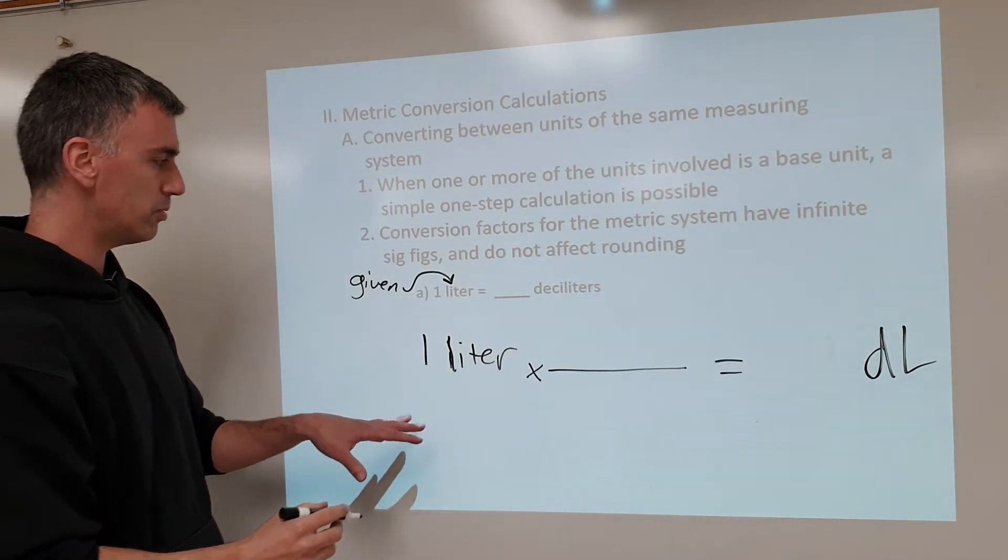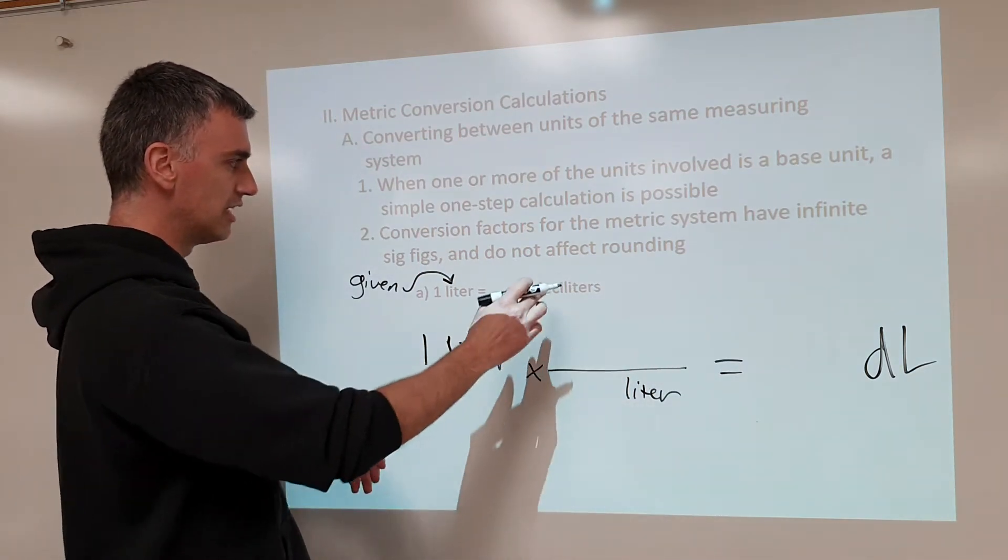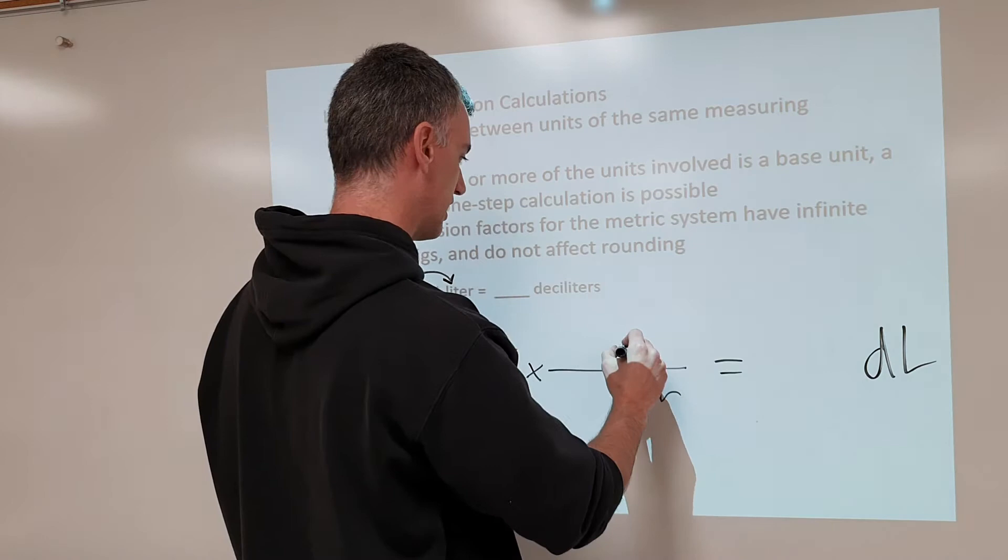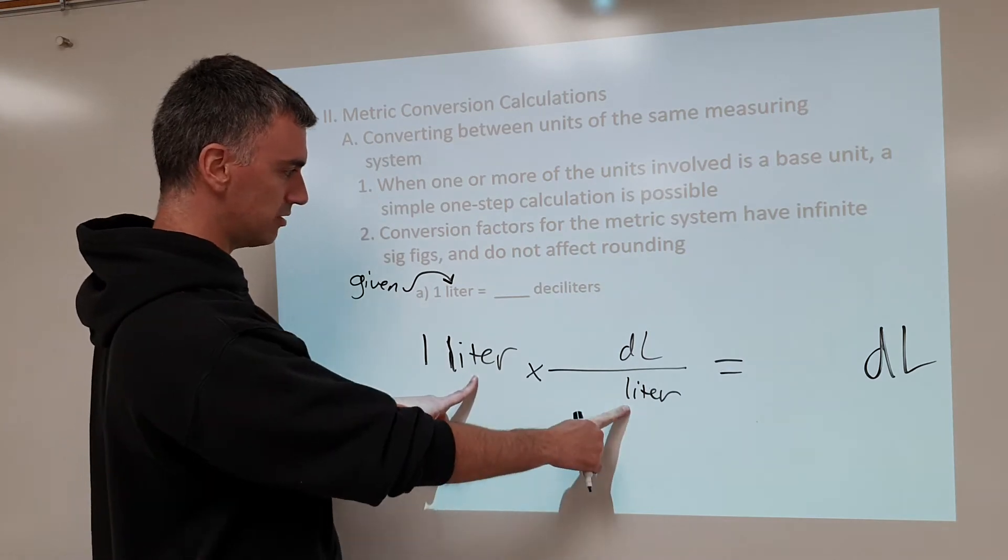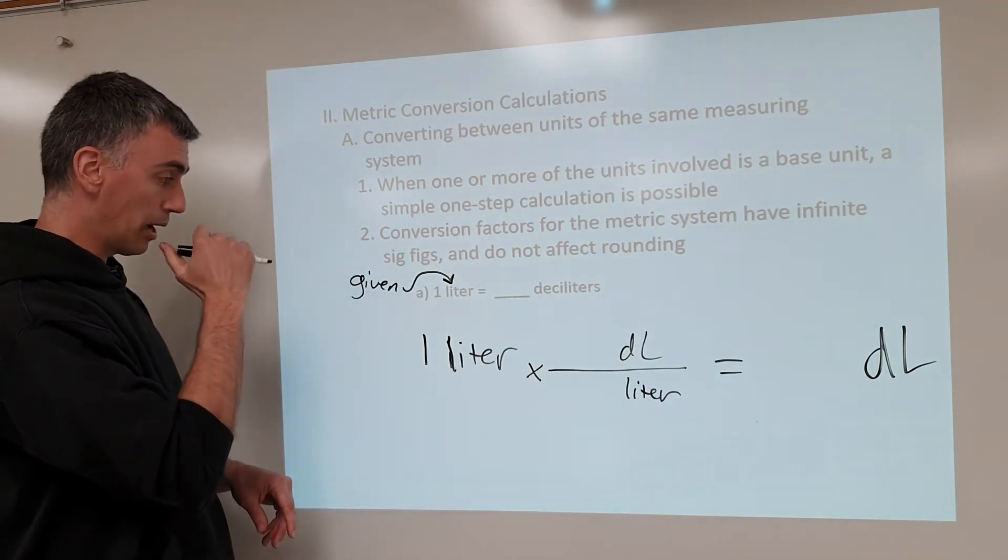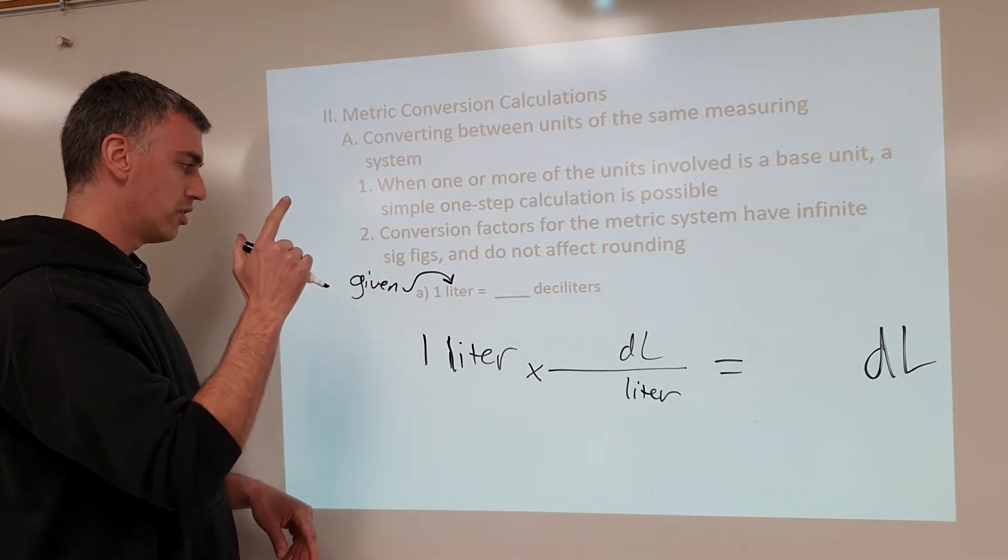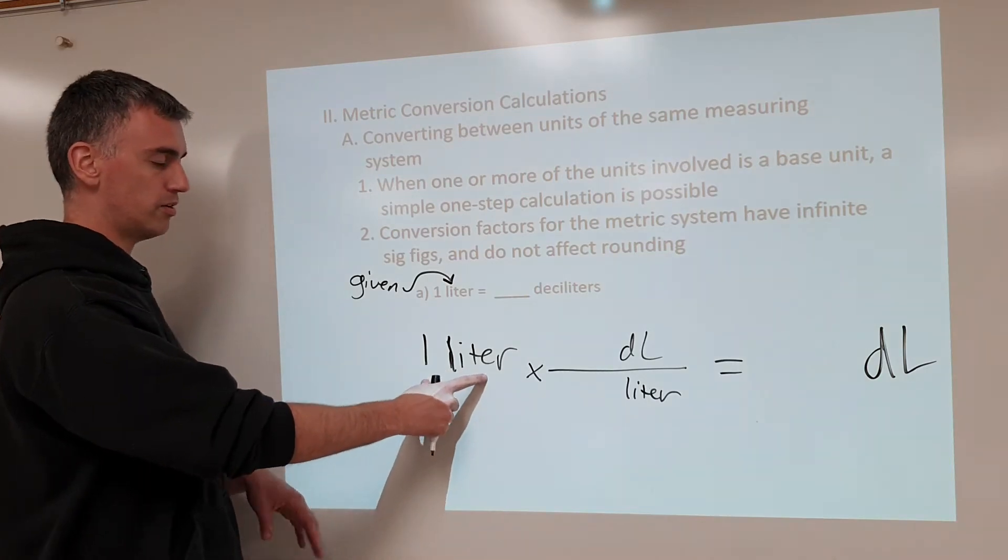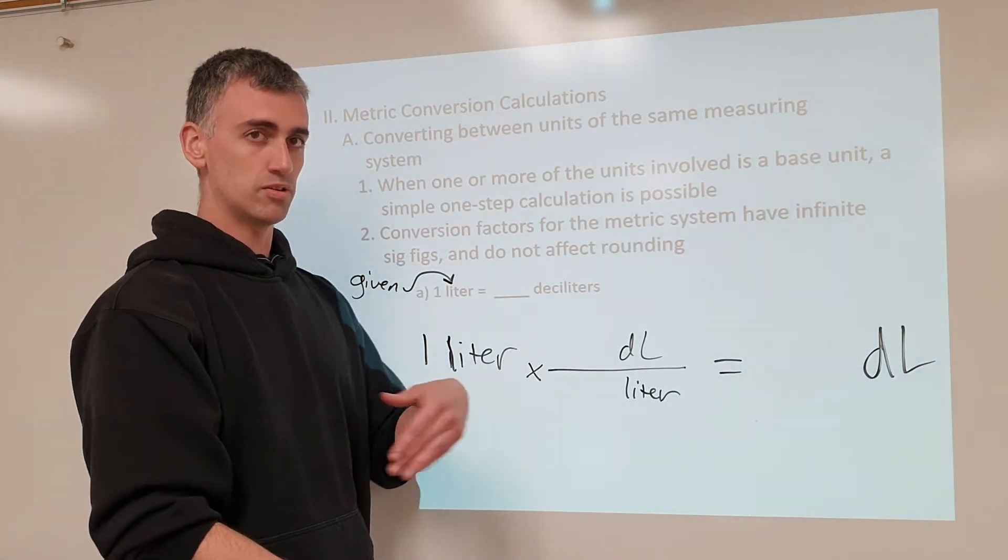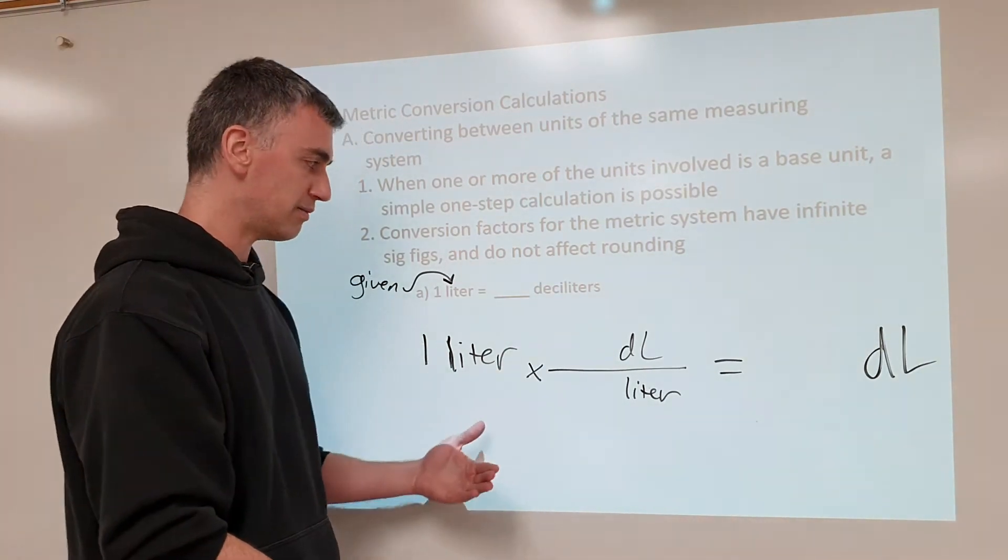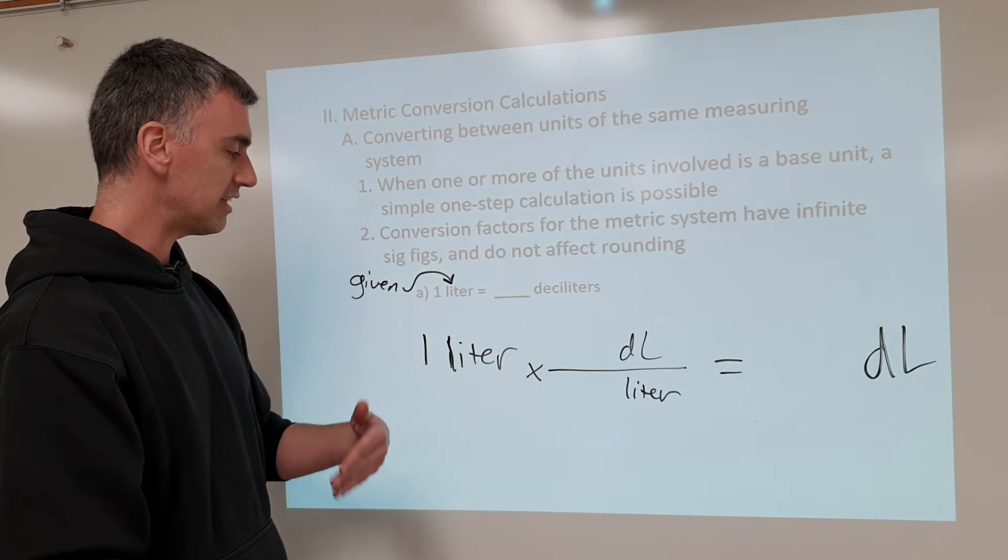So what I'm going to do is I'm going to put liter on bottom, because liter needs to cancel with liter, because it's not part of the final answer. Desi-liter needs to be part of the final answer, so that goes on top. This is the abbreviation for desi-liter. So this shows liter cancel liter to leave desi-liter as the answer, and you'll notice this has no numbers in it. This is because step one is set up your given, and step two is set up your units. It is only at the end that you finally plug numbers in, so don't even think about putting numbers in here until you set up units and make sure they cancel, which these do. Liter cancel liter, you have desi-liters.